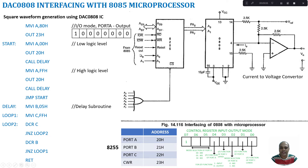Address lines A0 and A1 select the ports in the 8255: 00 selects port A, 01 selects port B, 10 selects port C, and 11 selects the control word register. These A0 and A1 lines from the 8085 are used to select the corresponding ports. Since this is configured in IO-mapped mode, it uses an 8-bit address for IO devices. Two bits are used here, and the remaining 6 bits are used for chip select lines.